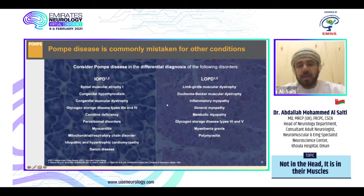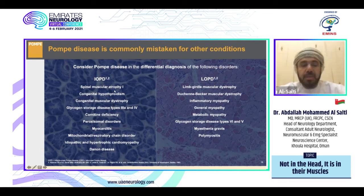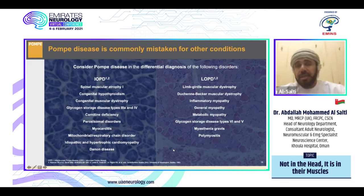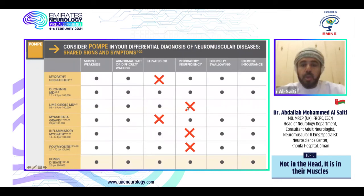The differential diagnosis of Pompe disease includes many conditions. For infantile onset, confusion arises with spinal muscular atrophy, congenital hypothyroidism, congenital muscular dystrophy, glycogen storage disease, carnitine deficiency, myocarditis, mitochondrial disease, or other congenital cardiomyopathies. For late onset, the most common mimics are limb girdle muscular dystrophy, Duchenne/Becker muscular dystrophy, inflammatory myopathy, metabolic myopathy, myasthenia gravis, and polymyositis. A key distinguishing clue is that Pompe disease more likely presents with respiratory insufficiency, whereas polymyositis, inflammatory myopathy, and limb girdle muscular dystrophy are less likely to do so.